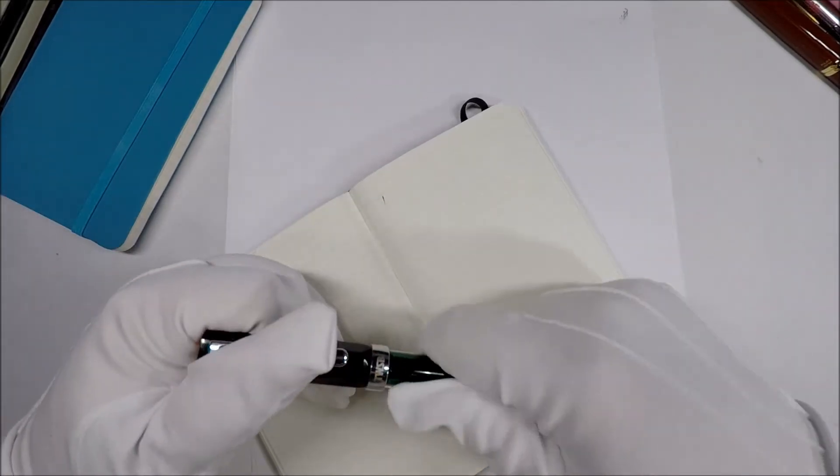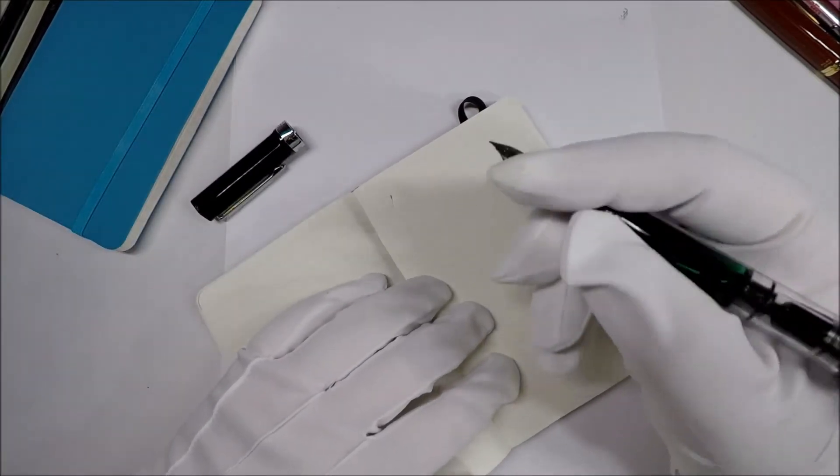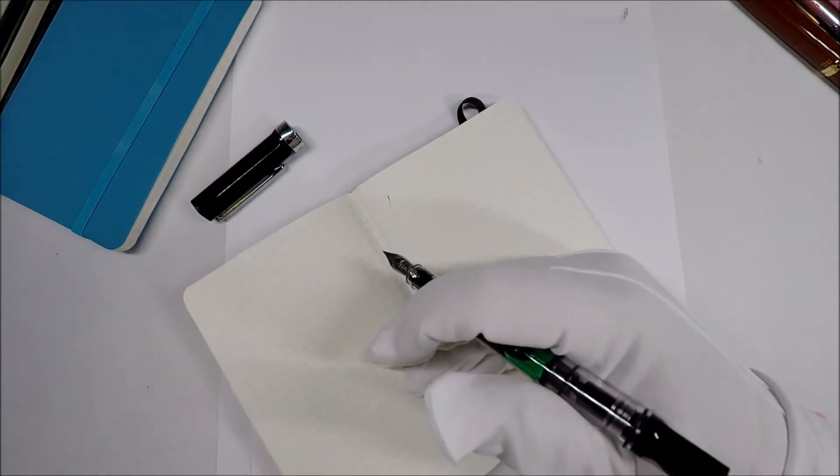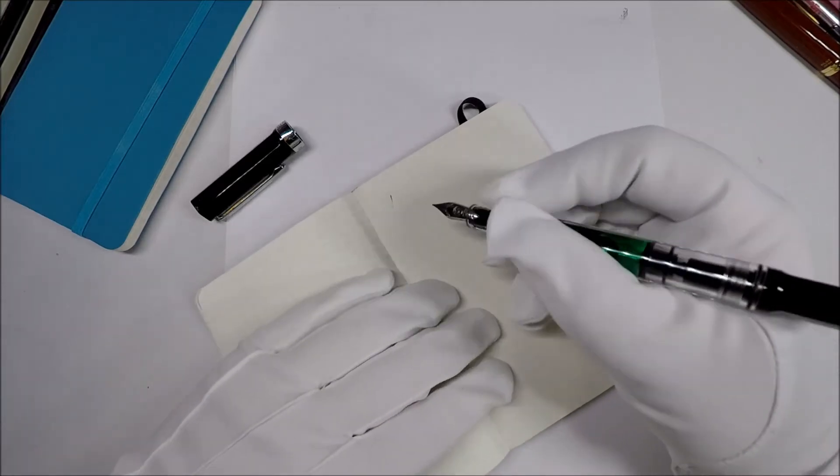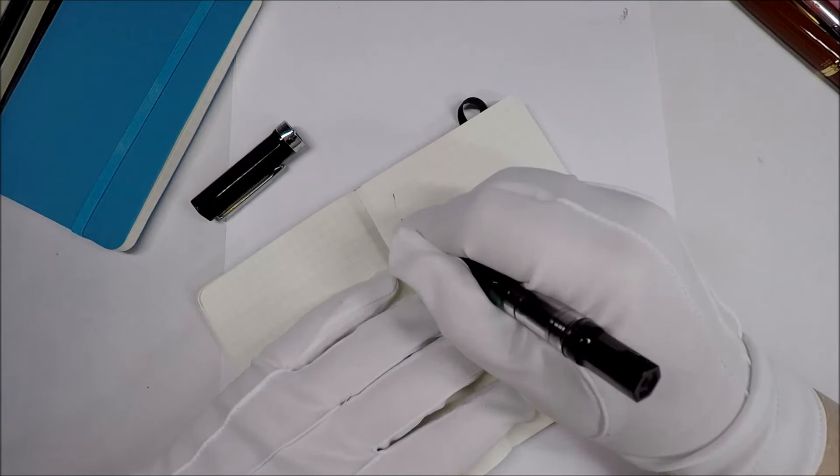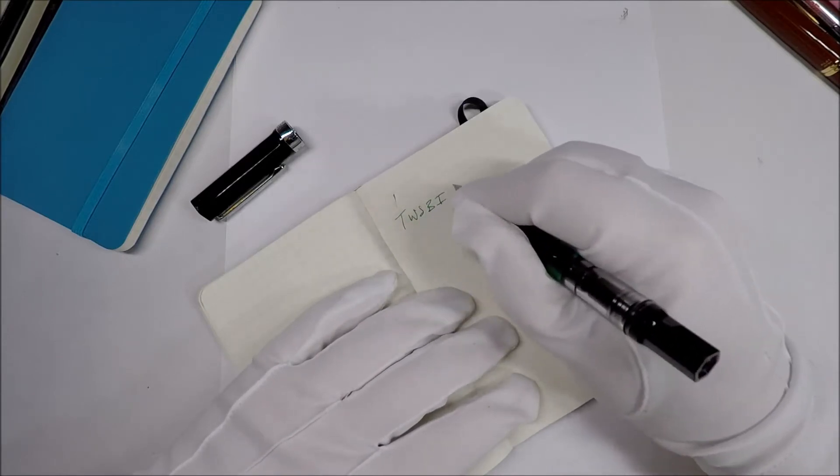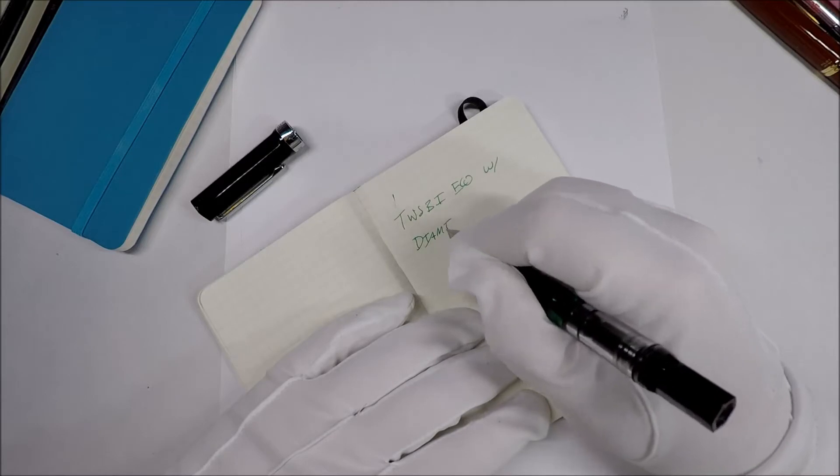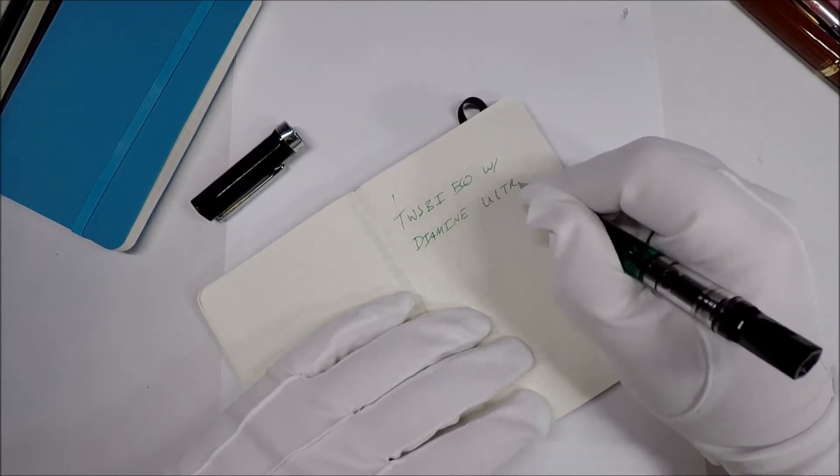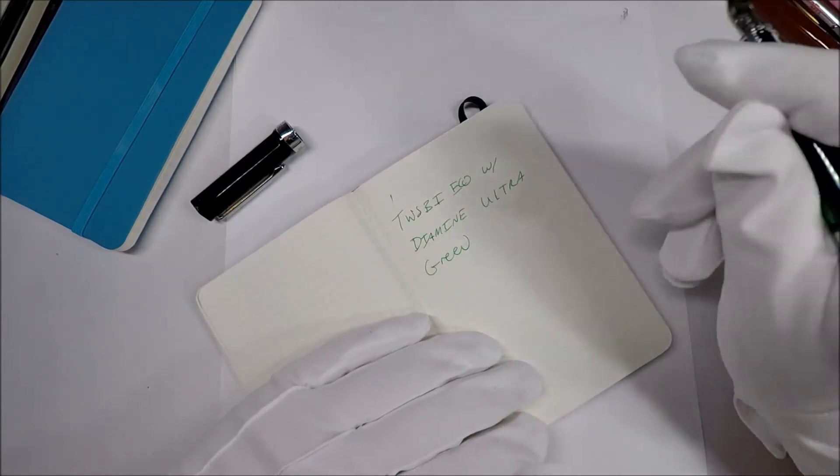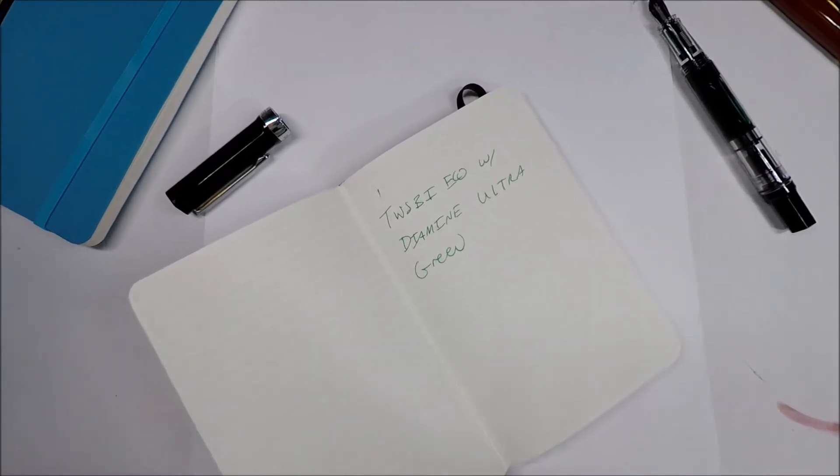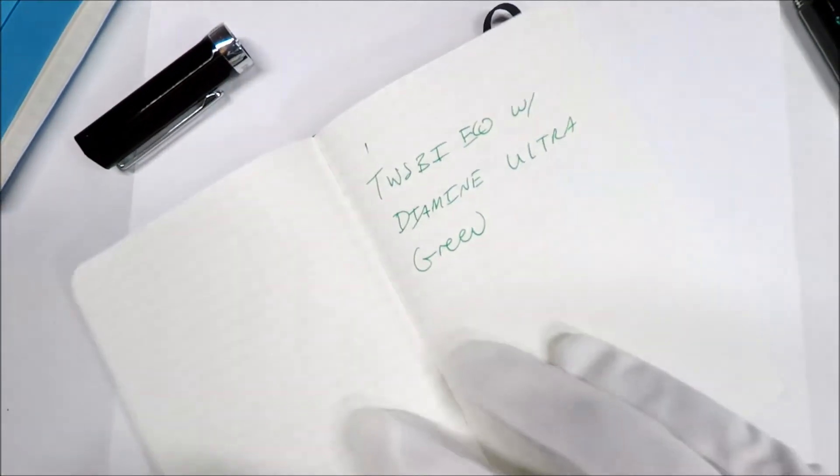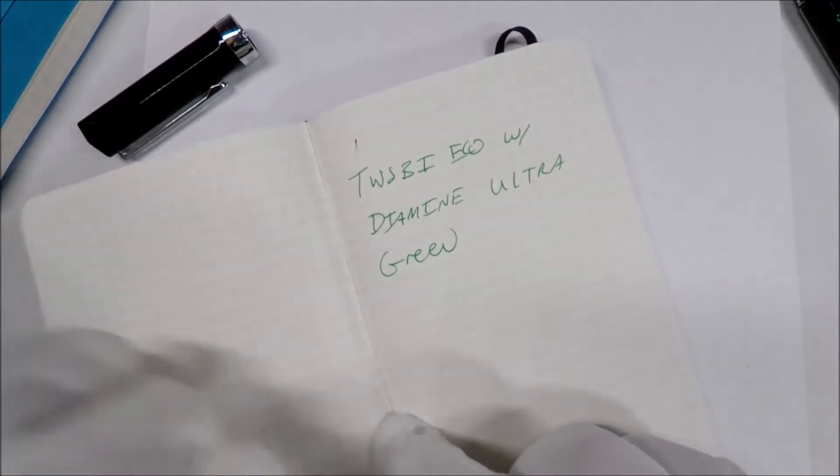Actually seems kind of appropriate to try this with, you know, the Twisbi notebook. And this is loaded with Ultra Green? Diamine. I think it's Ultra Green. Yeah. It's Diamine Ultra Green. So this is a Twisbi Eco with Diamine Ultra Green. Seems to write pretty good. Let me zoom in a little bit. Can y'all see that okay? Seems to write pretty good.